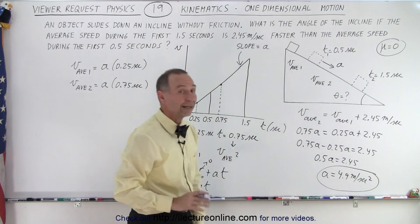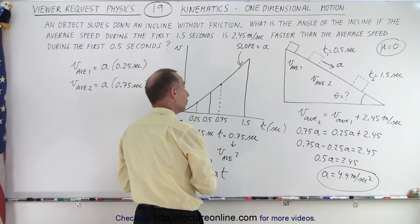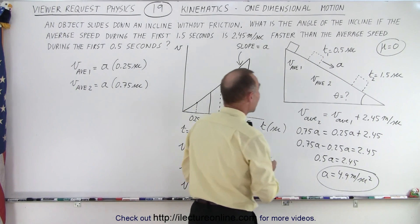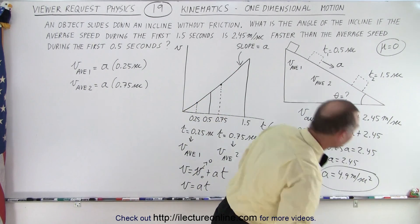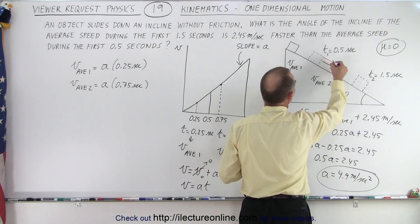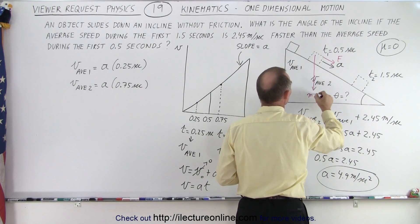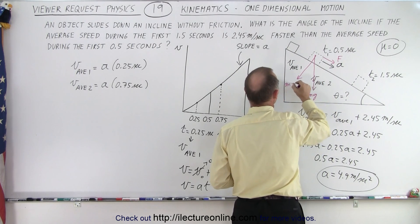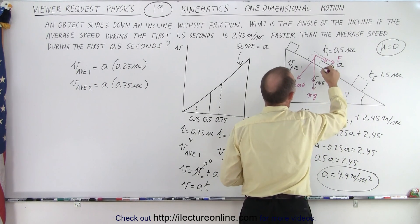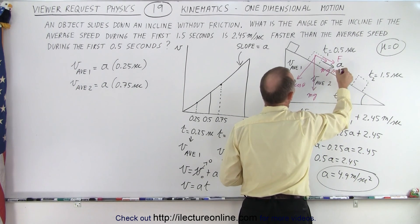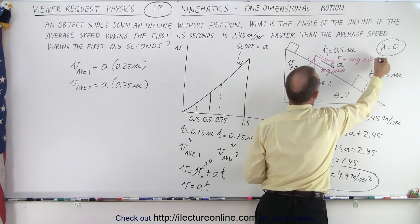And then we realize on an incline that the acceleration can be found as follows. So what is the force down the incline? Well, we have the weight due to gravity, mg. We have the perpendicular component, which is mg cosine theta. And we have the parallel component, which is mg sine of theta, which is equal to the force that pushes the object down.